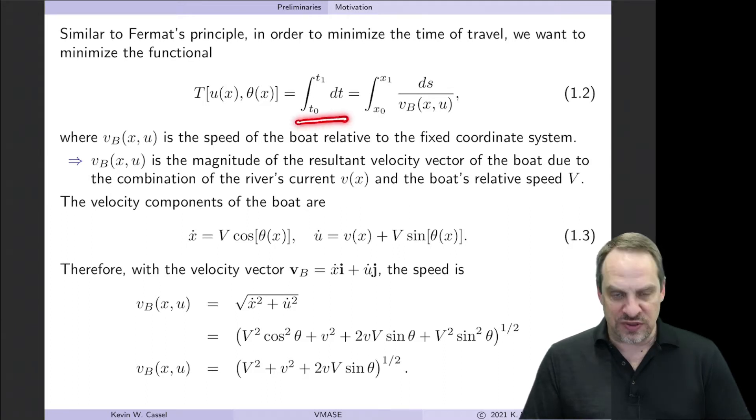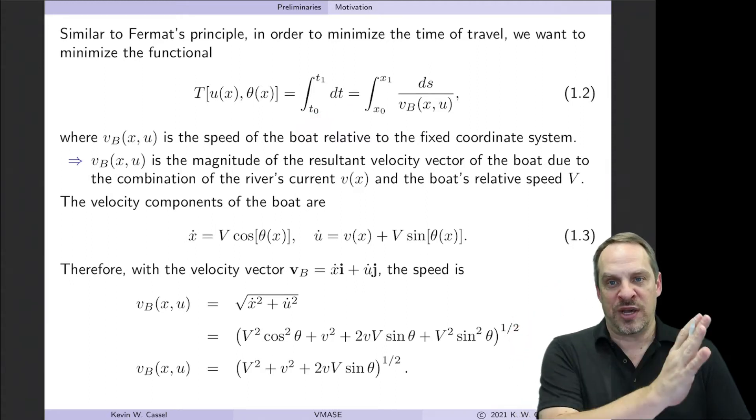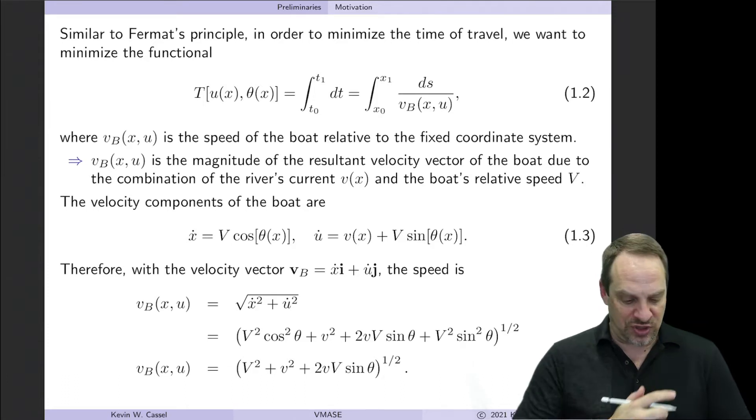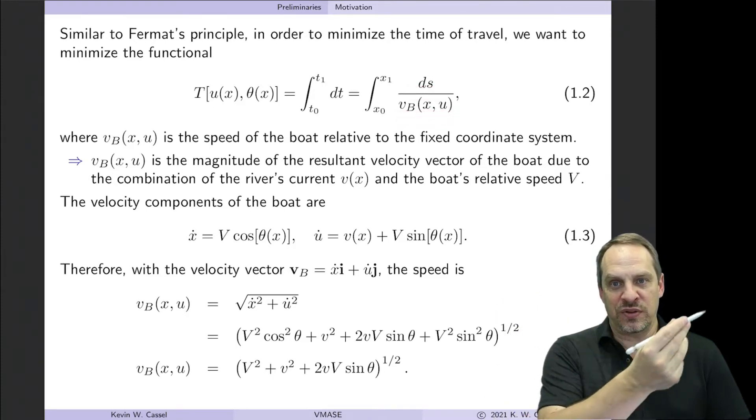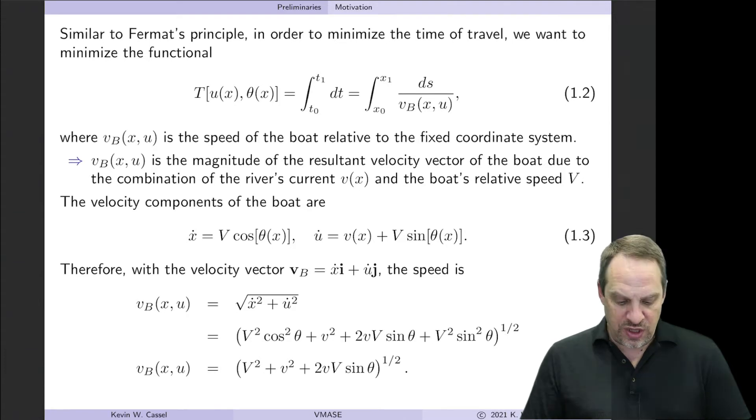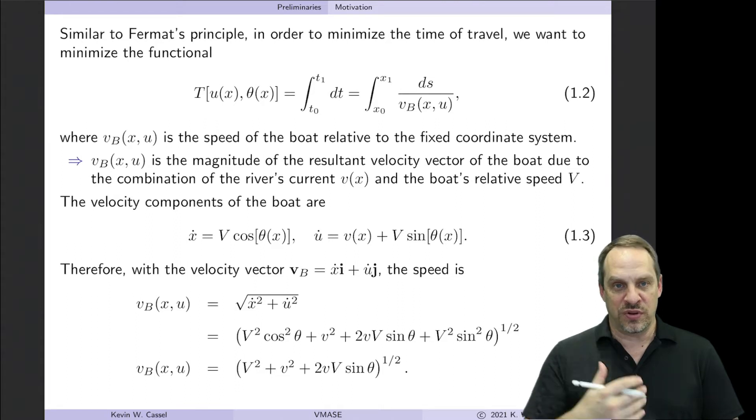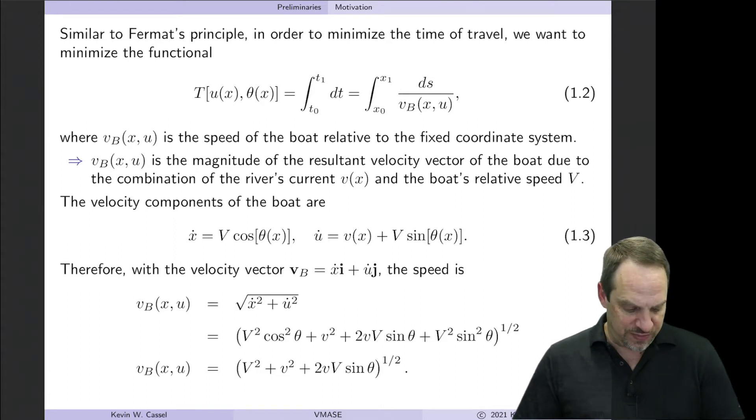So once again, very similar to the optics example. The travel time will be the integral of dt from the time at which I start on the left bank to the time at which I get to my destination on the right bank. So I add up those little dt's along the path, and that gives me the total travel time. But time is distance divided by velocity. So that's ds. So that's a little differential arc length along my path, U of x. And the velocity of the boat is both due to the fact that I have my motor going as well as the fact that the river is flowing at a certain speed.